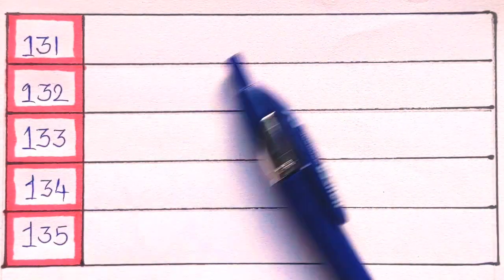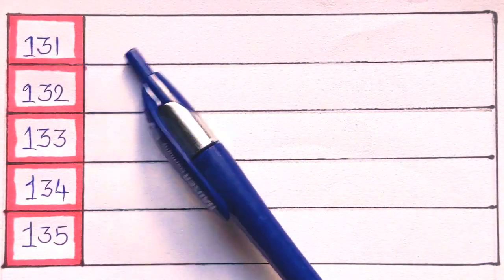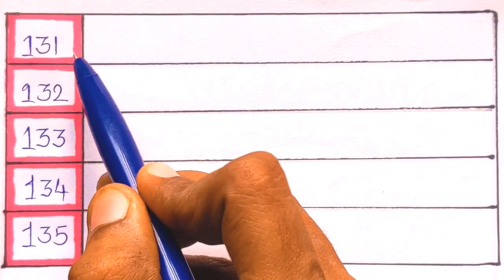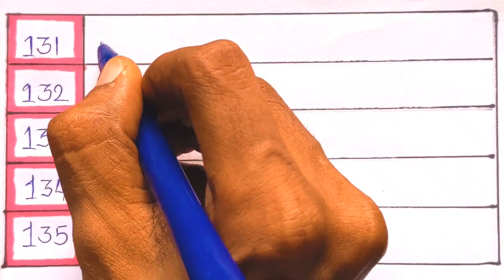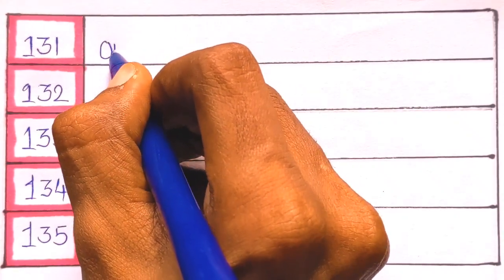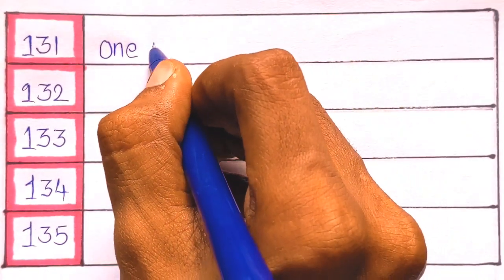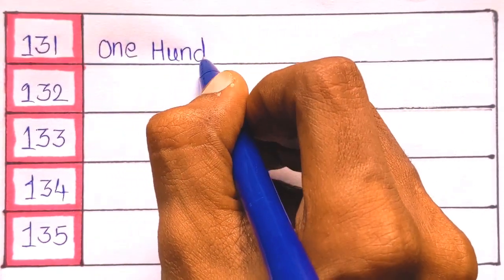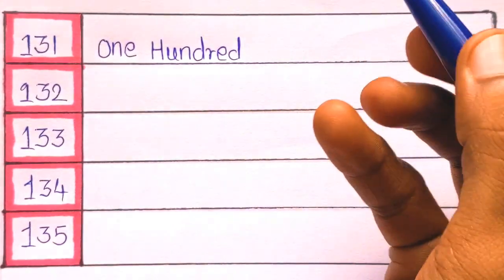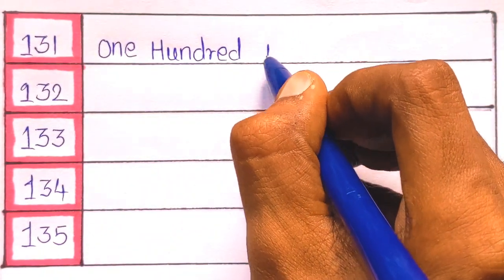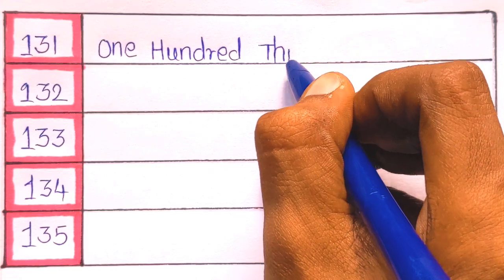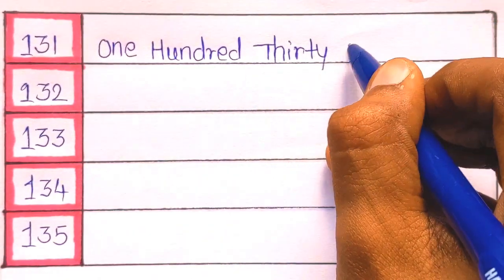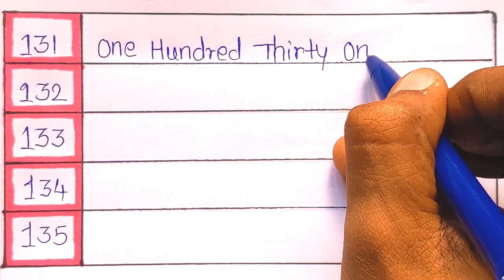Let's write the number names from 131 to 140. First it's 131. O-N-E hundred, H-U-N-D-R-E-D, one hundred thirty, T-H-I-R-T-Y, thirty one, O-N-E. 131.